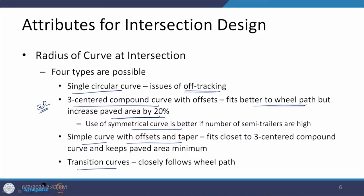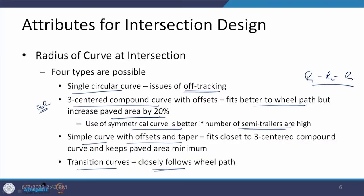The symmetrical curve — with an r1, r2, r1 configuration — is better when the number of semi-trailer units is high. Transition curves follow the wheel path closely and can be laid easily. A simple curve with offsets and taper closely matches the 3-centered compound curve while helping reduce the paved area, meaning only the minimum required paved area is provided without lateral expansion as happens with the 3-centered compound curve.